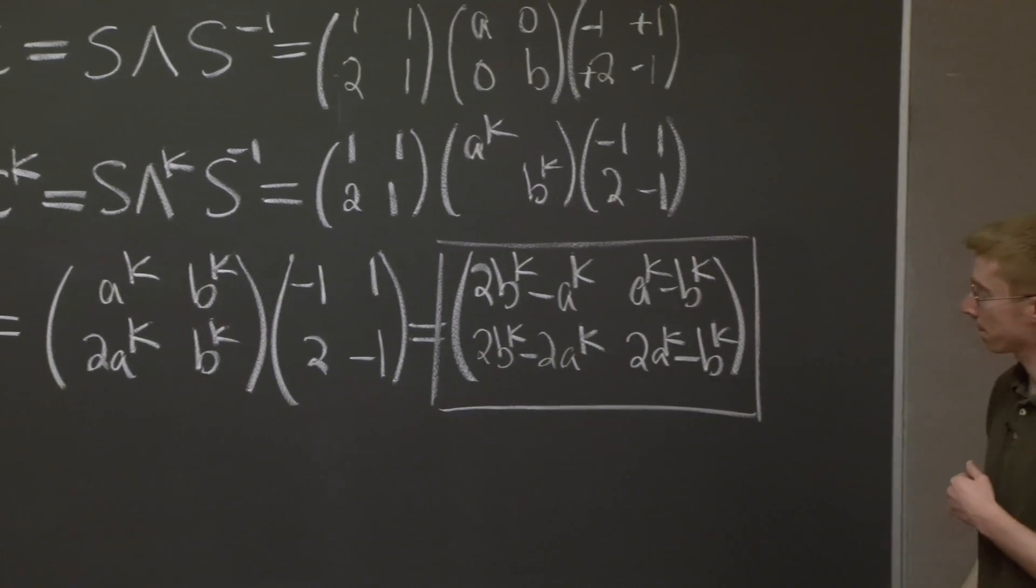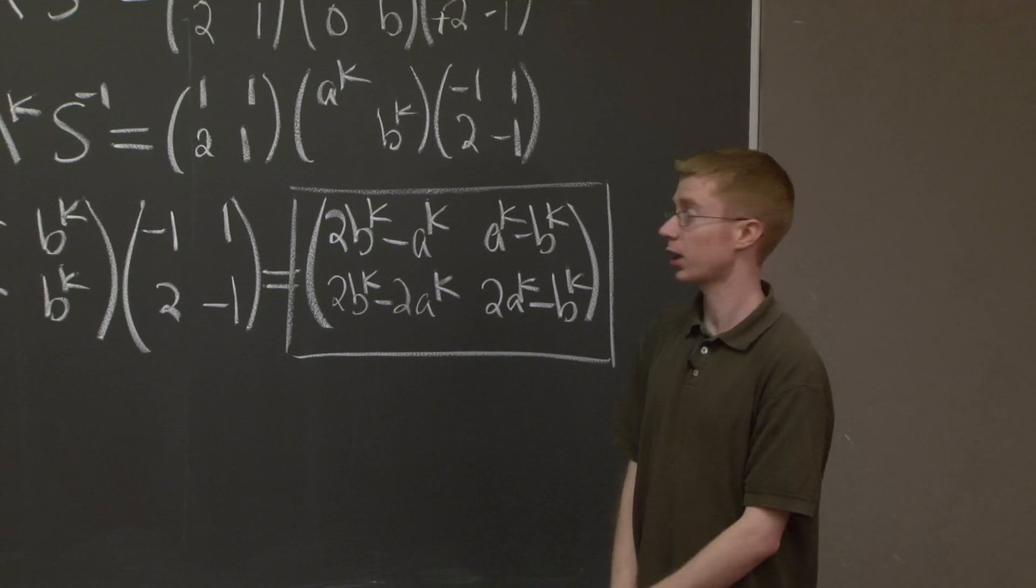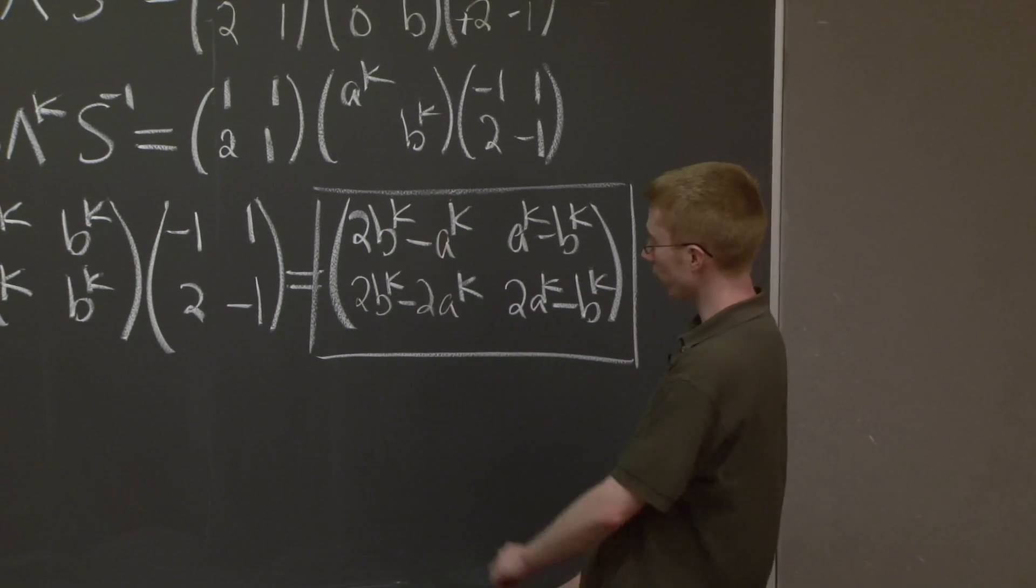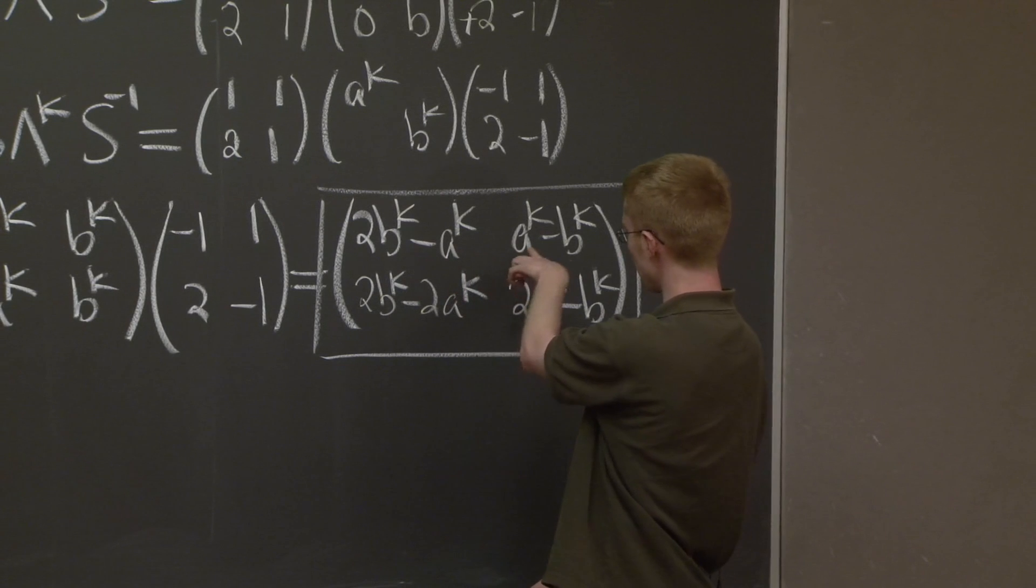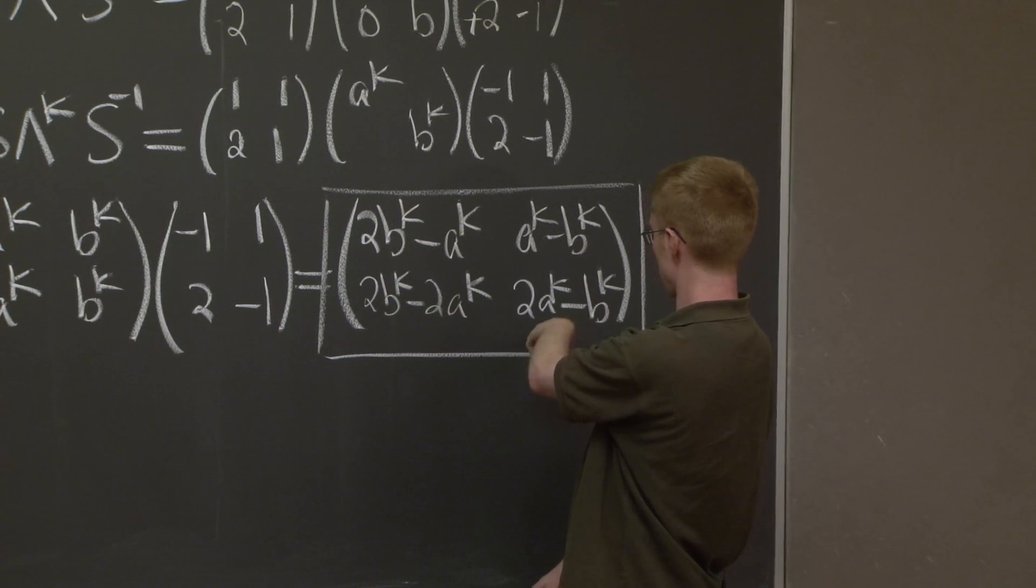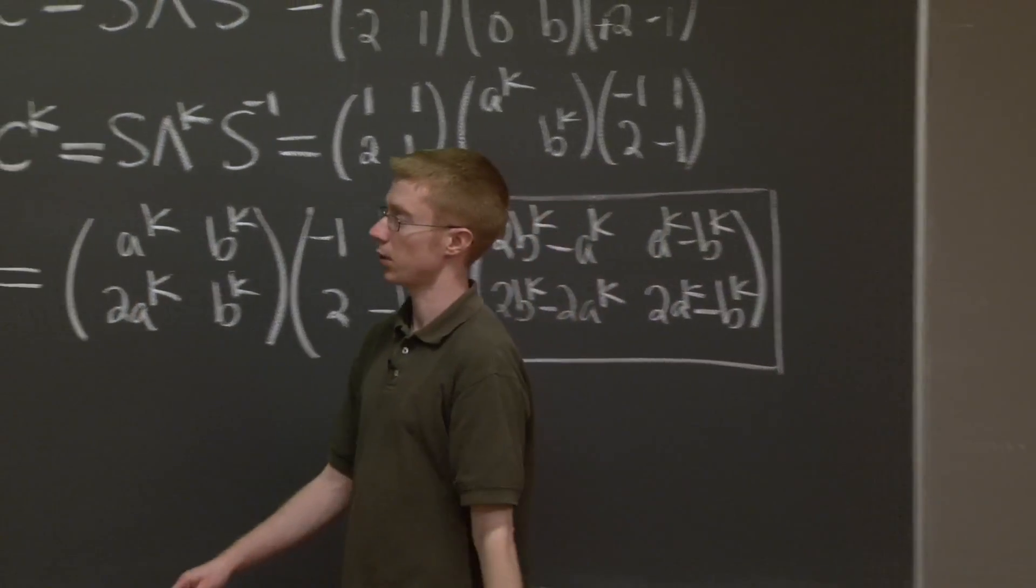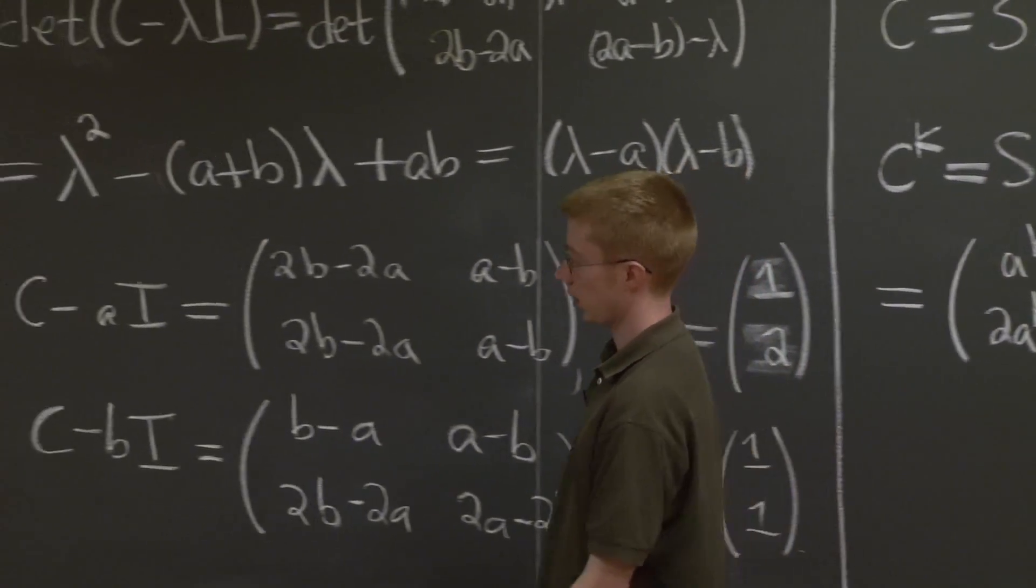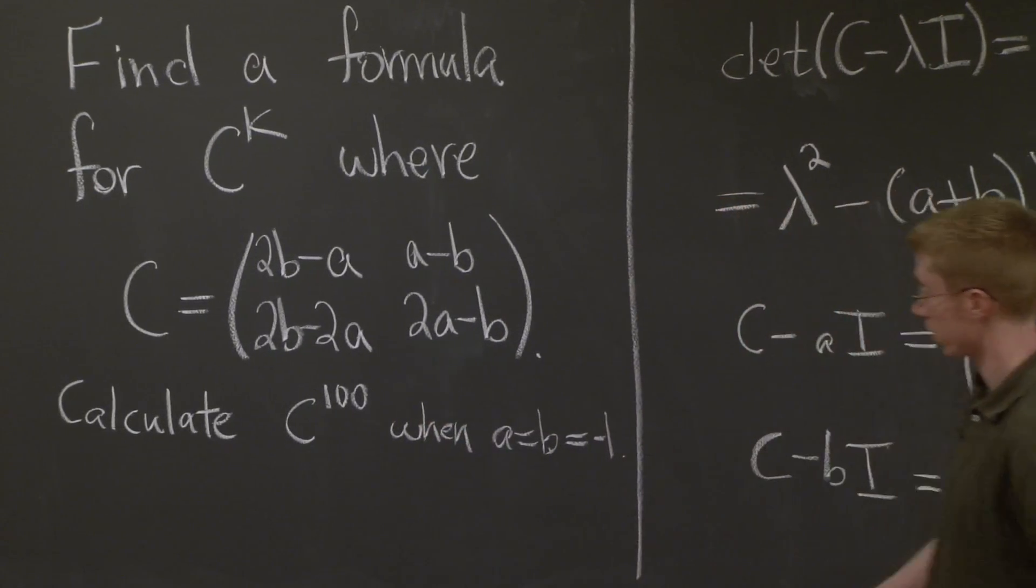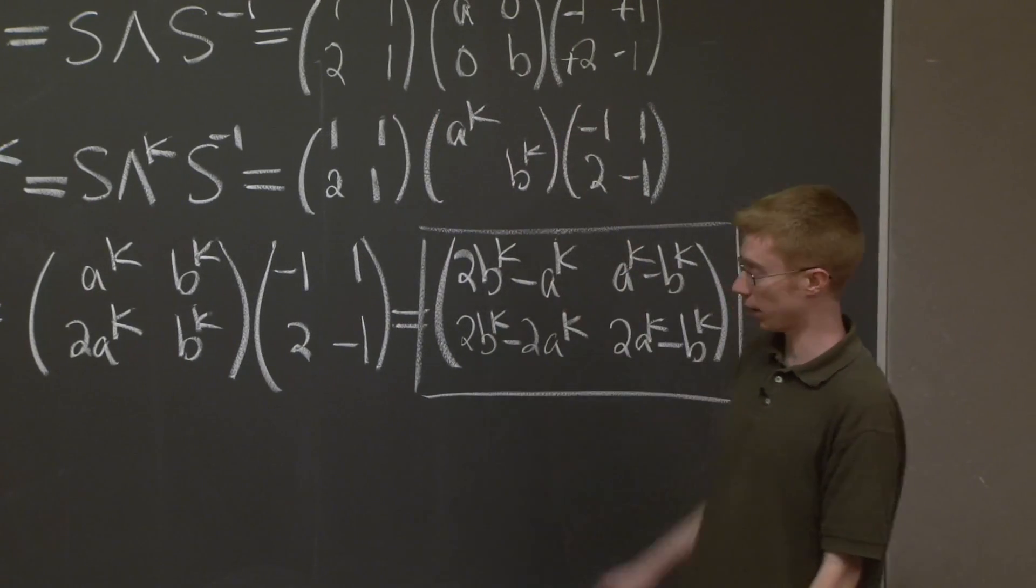Good. A quick check. It's always good to check your work here. Let's plug in K equals 1. And what do we get? We get 2B minus A, A minus B, 2B minus 2A, and 2A minus B. And if we can go all the way back to our matrix at the very beginning, that agrees perfectly with what we started with. So that's good. That means that we did this decomposition right.